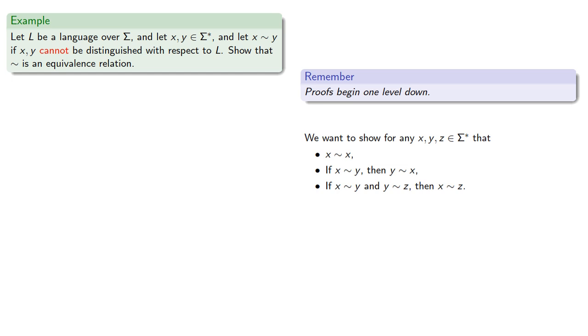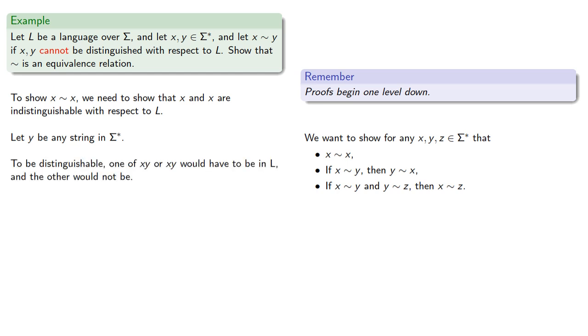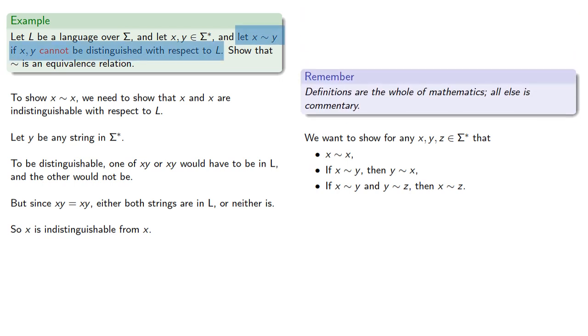Remember we need to begin one level down. To show that X squiggle X, we need to show that X and X are indistinguishable with respect to L. Let Y be any string. To be distinguishable, one of X, Y or X, Y would have to be in our language and the other would not be. But since they are the same string, either both strings are in L or neither is. So X is indistinguishable from X, and definitions are the whole of mathematics, all else is commentary, which means X squiggle X.